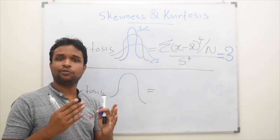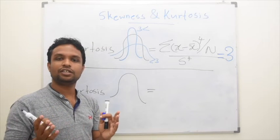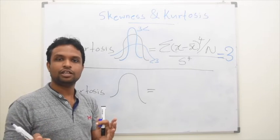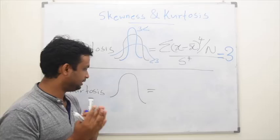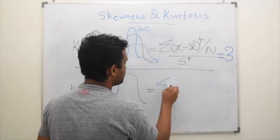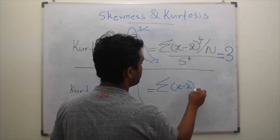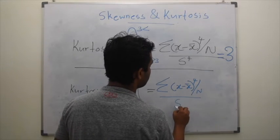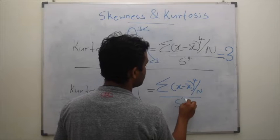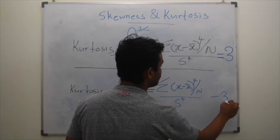But for skewness, normal distribution is 0, so it is easier to identify. Because of that, statisticians have modified this formula: summation (x minus x-bar) to the power 4 divided by n, divided by standard deviation to the power 4, and this total minus 3.